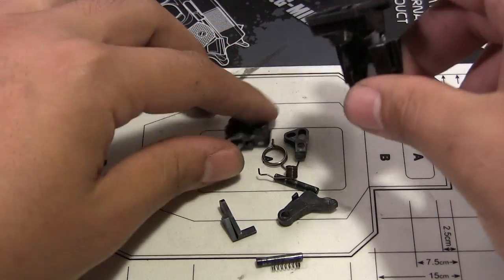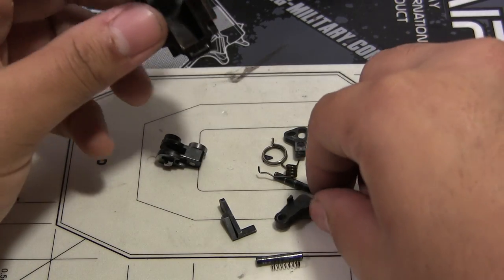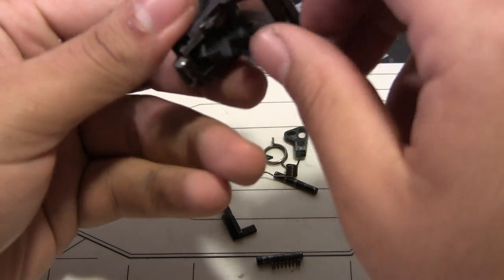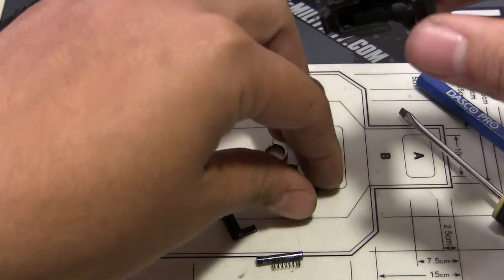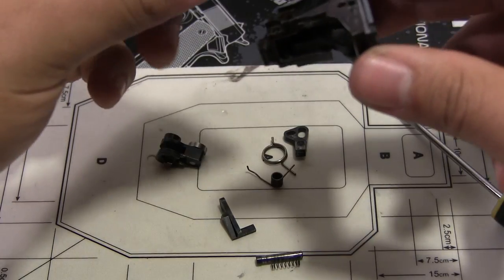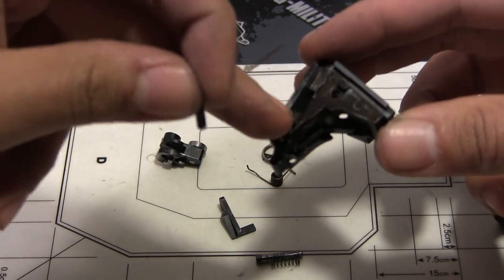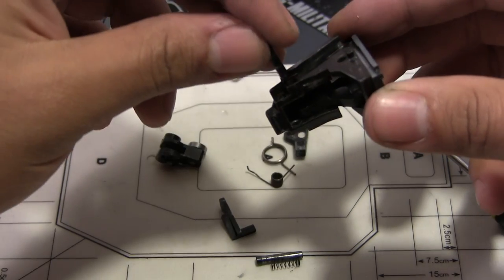And I'll reassemble it for you right now. First thing you want to do is you're going to want to get your sear in here first, make life easy. And there's one, two, three holes. Second hole is for the sear.